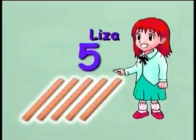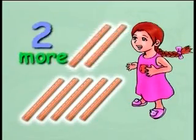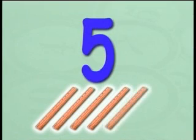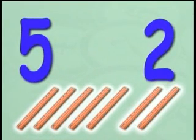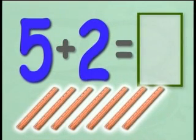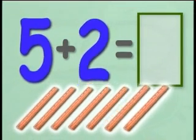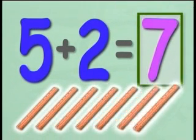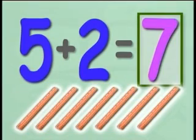Lisa has five rulers. Jenny has two rulers more than Lisa. How many rulers does Jenny have? If Lisa has five rulers and Jenny has two more than Lisa, then we must add two to five to find out the number of rulers Jenny has. So, five plus two equals seven. Jenny has seven rulers. Well, that's all for now. Don't forget to do your homework. And I'll see you again next time. Bye!